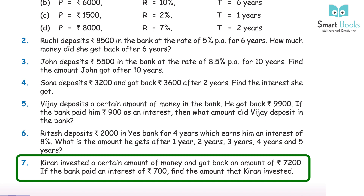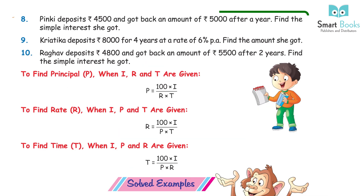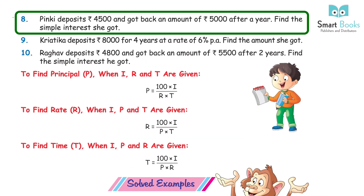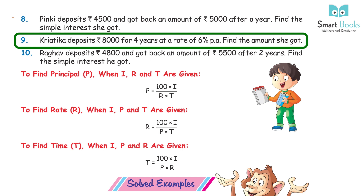Question 7: Kiran invested a certain amount and got back Rs 7,200. If the bank paid interest of Rs 700, find the amount Kiran invested. Answer: Rs 6,500. Question 8: Pinky deposits Rs 4,500 and got back Rs 5,000 after a year. Find the simple interest she got. Answer: Rs 500. Question 9: Kratika deposits Rs 8,000 for 4 years at 6% PA. Find the amount she got. Answer: Rs 9,920.